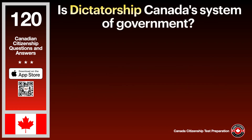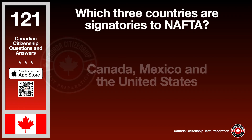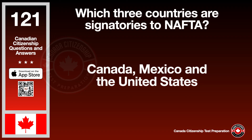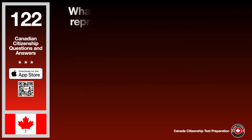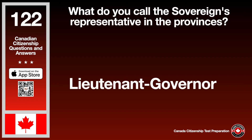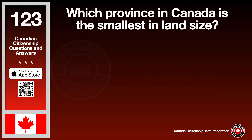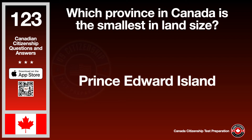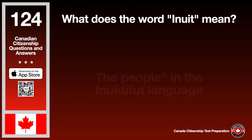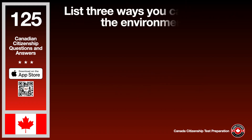Is dictatorship Canada's system of government? The answer is no. Which three countries are signatories to NAFTA? The answer is Canada, Mexico, and the United States. What do you call the sovereign's representative in the provinces? The answer is Lieutenant Governor. Which province in Canada is the smallest in land size? The answer is Prince Edward Island. What does the word 'Inuit' mean? The answer is 'the people' in the Inuktitut language.